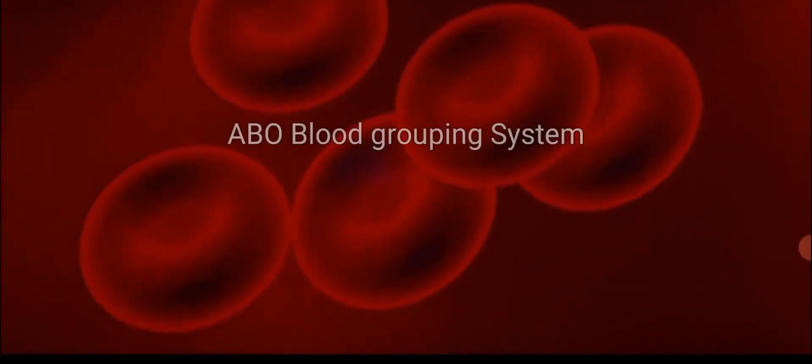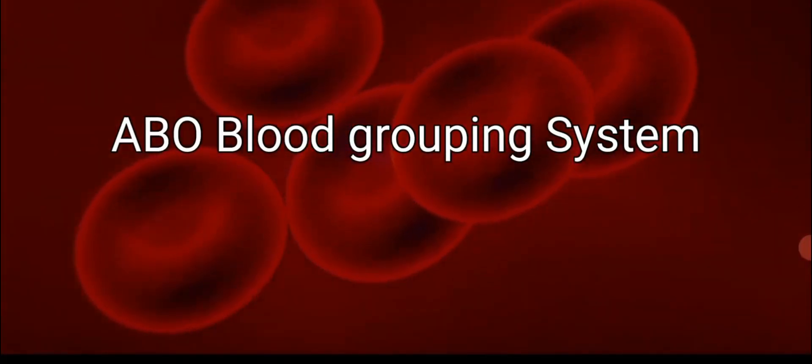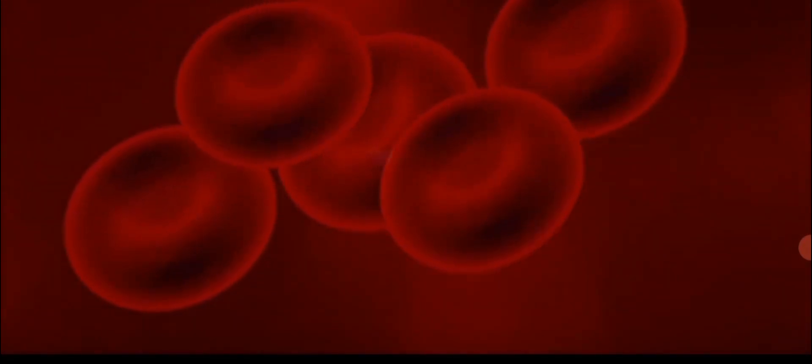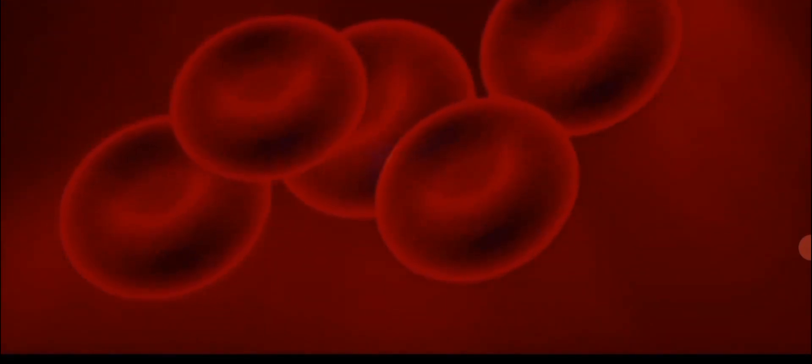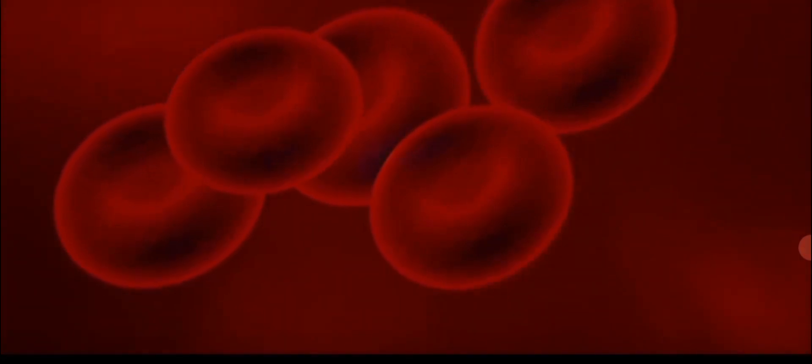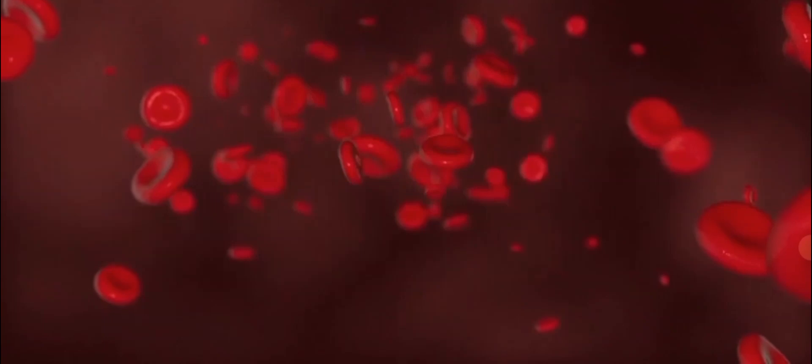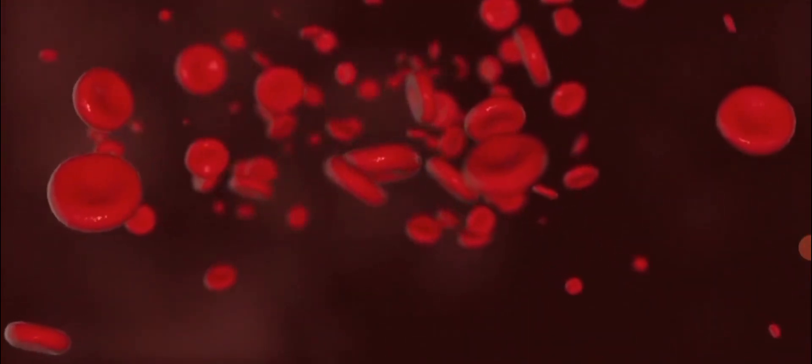In this video session, we'll be discussing about blood grouping systems. There are two types of blood grouping systems which are accepted and used all around the world: ABO grouping system and RS grouping system. In this video session, we'll be discussing about ABO blood grouping system. Let's begin.